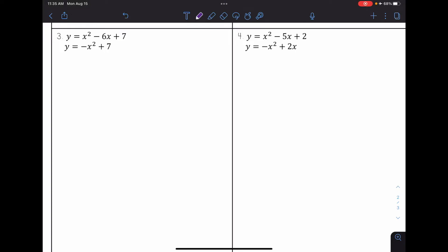In this video, we're going to be looking at solving algebraically a quadratic slash quadratic system. So number three, I have y equals x squared minus 6x plus 7, and then y equals negative x squared plus 7.